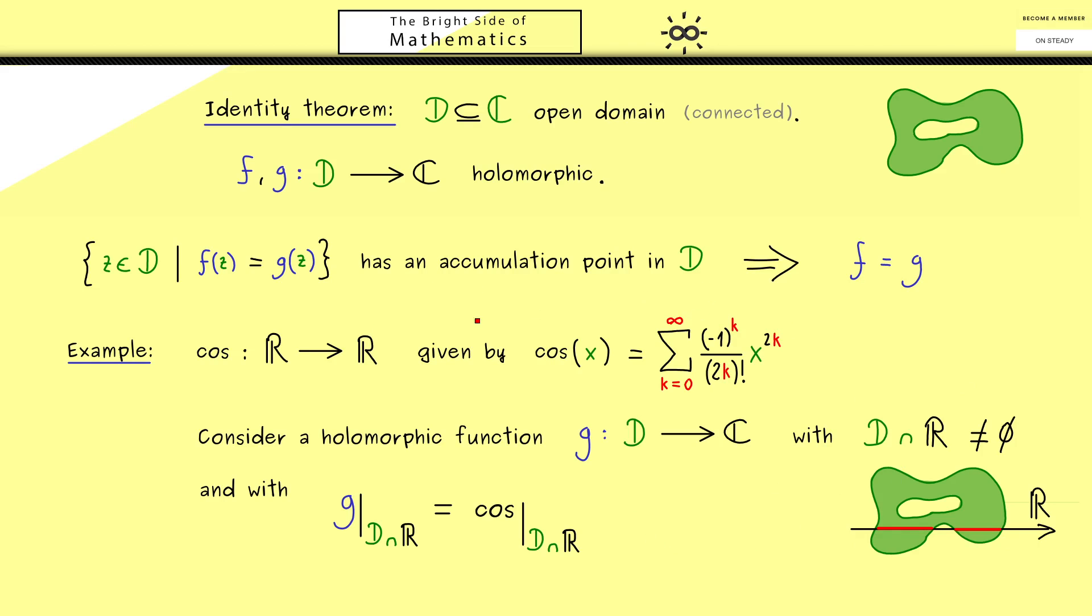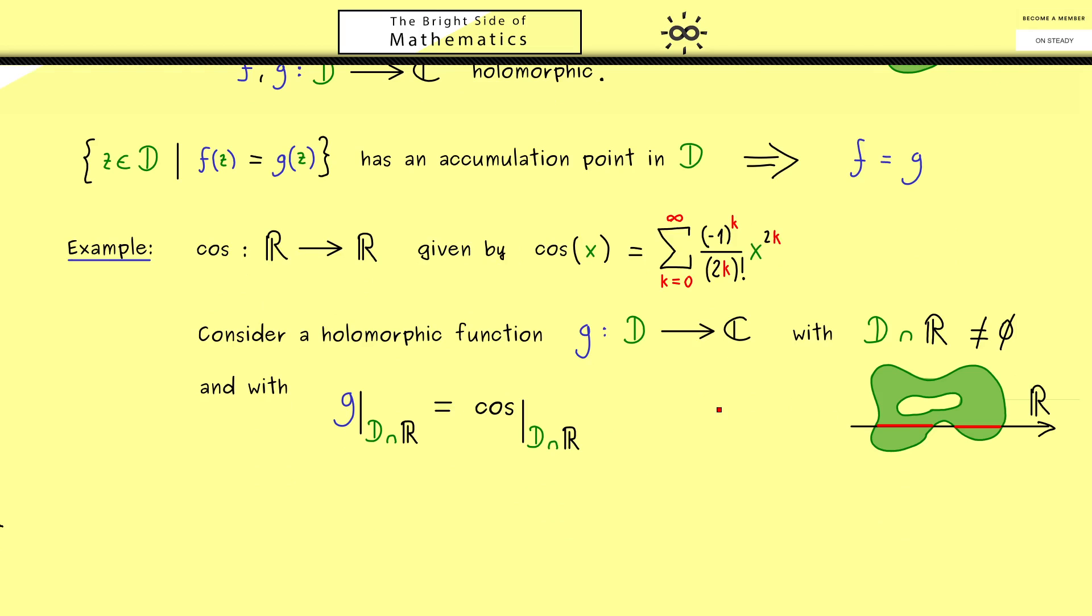In other words, the premise here is obviously fulfilled. Therefore, we can conclude that the function g can also be represented by this power series here. So there you see this is the application of the identity theorem.